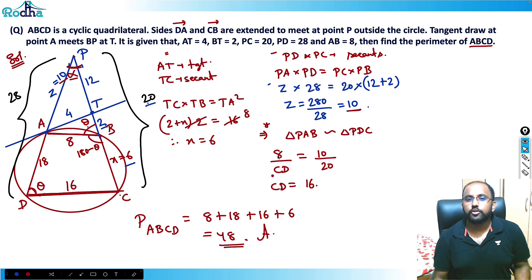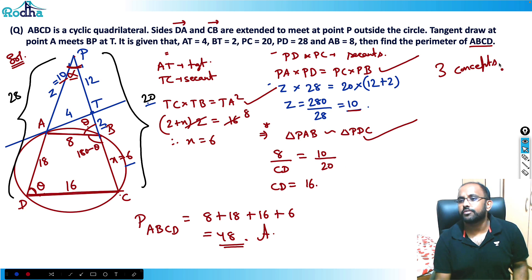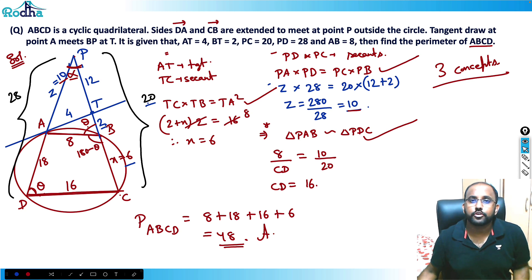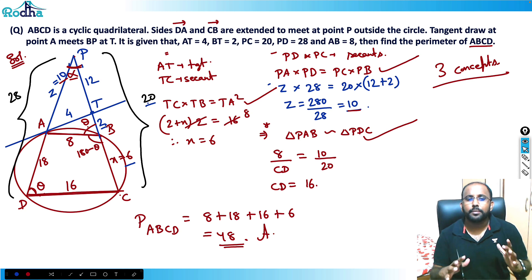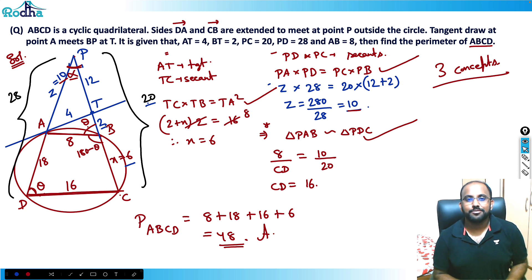This is a very good question — three concepts are used: tangent-secant theorem, two-secant theorem, and similarity. A typical CAT-level question testing multiple concepts together, all very basic. A beautiful question — solve it on your own. Thank you.